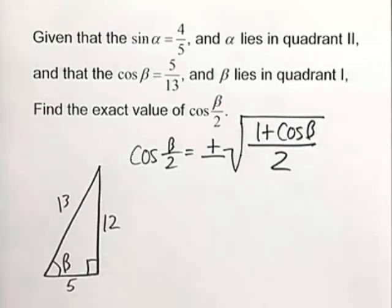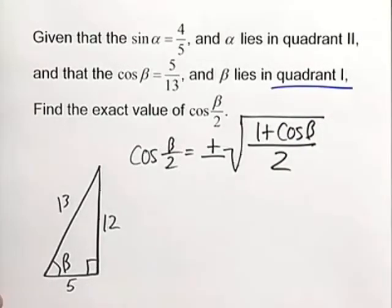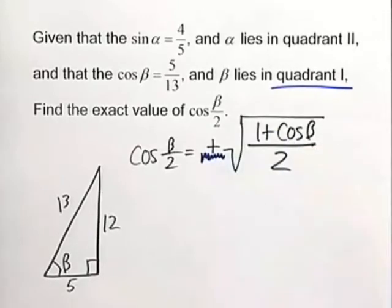For this particular problem, we only need the beta triangle. Now note, since β lies in quadrant I, we know that cosine is positive in quadrant I, so we can throw out the negative. We'll just be looking at the positive case.